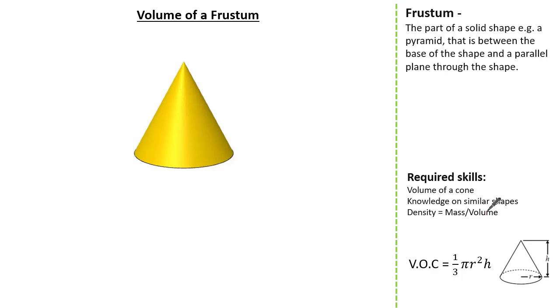Before we start, let's have a look at the definition. A frustum is a part of a solid shape — for example, a pyramid — that is between the base of the shape and a parallel plane through the shape.